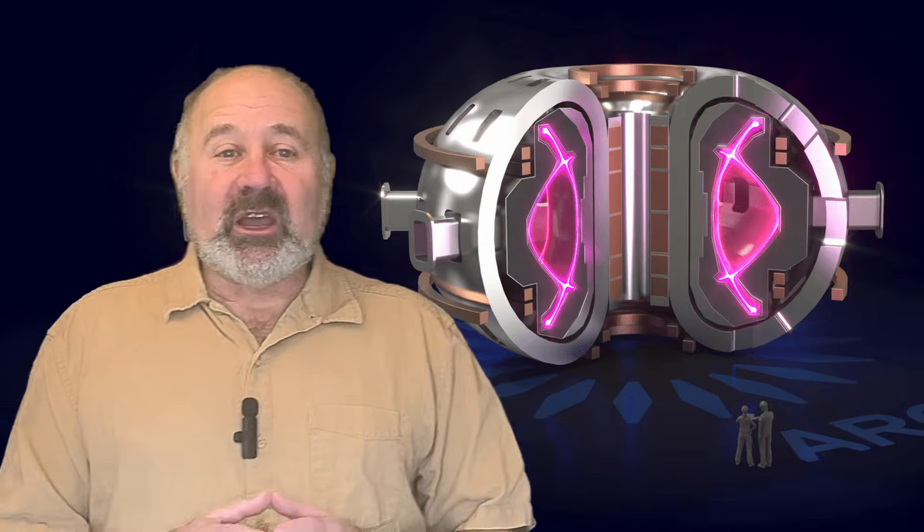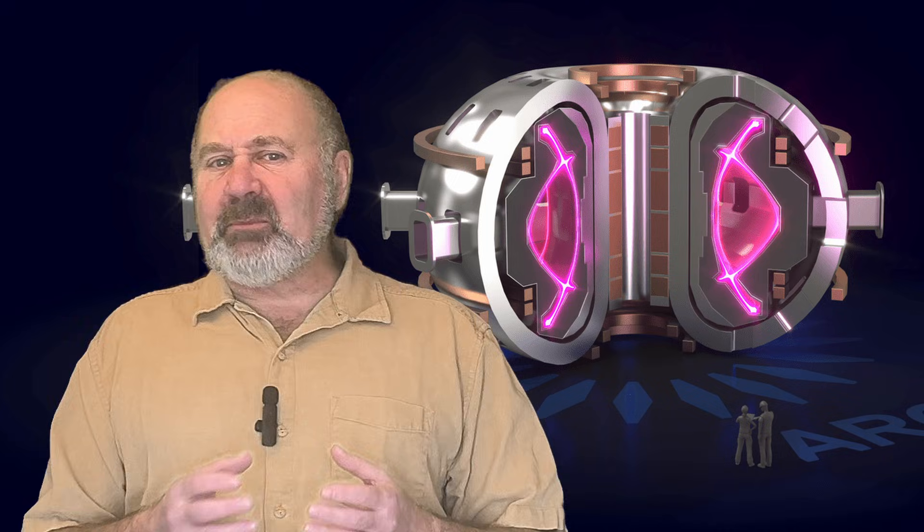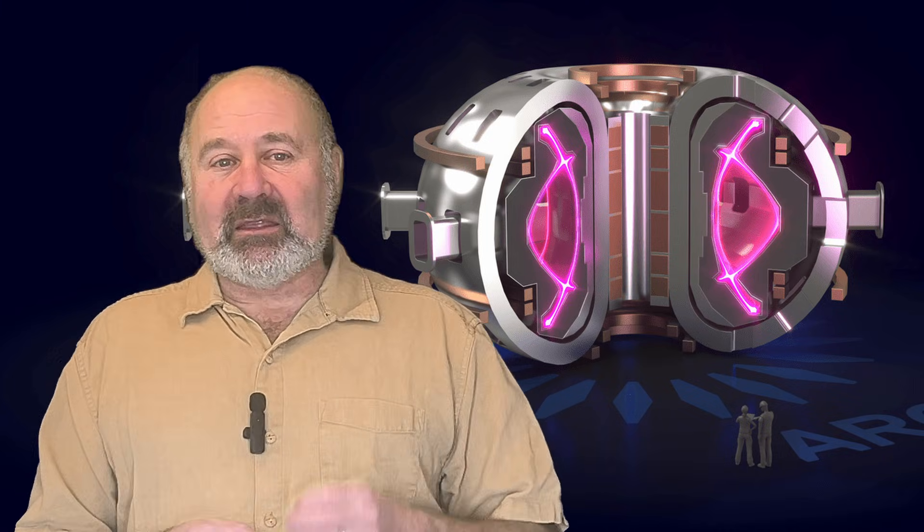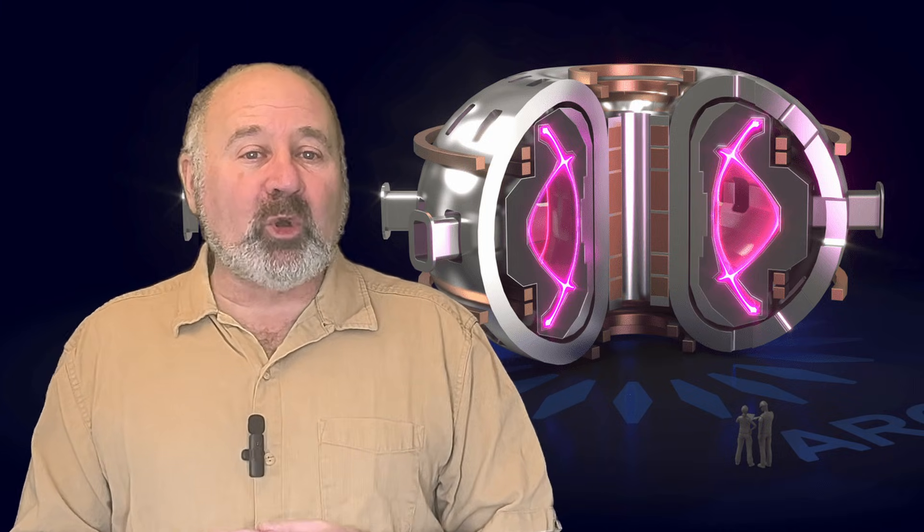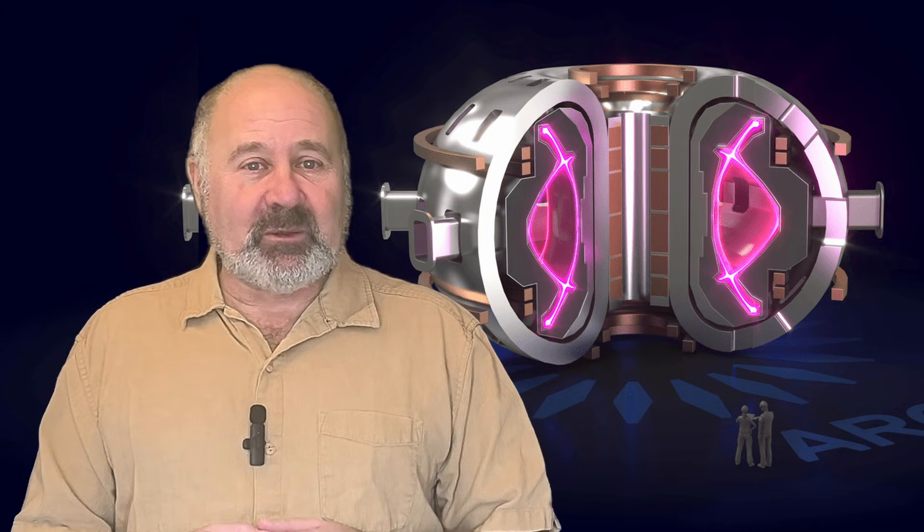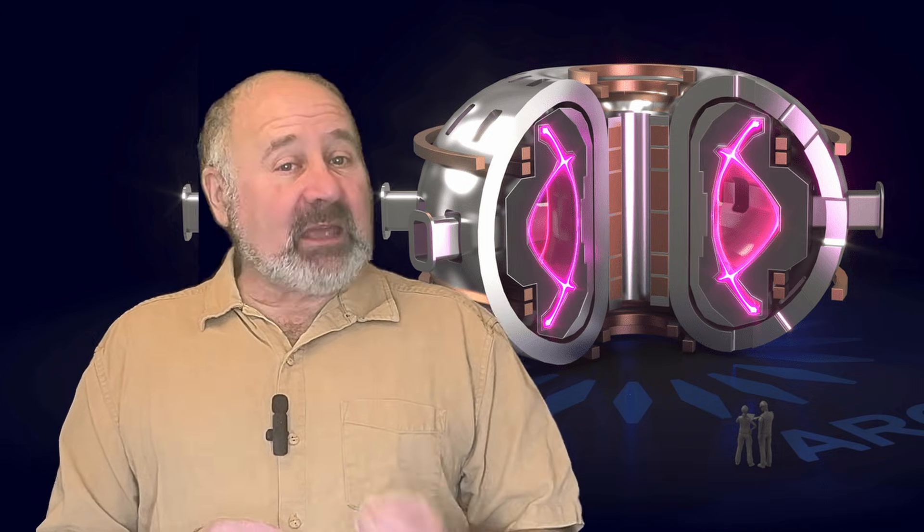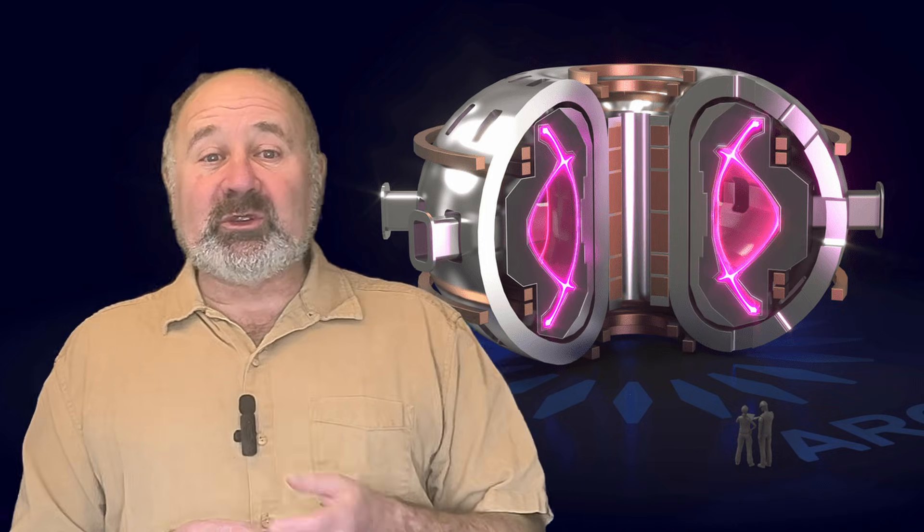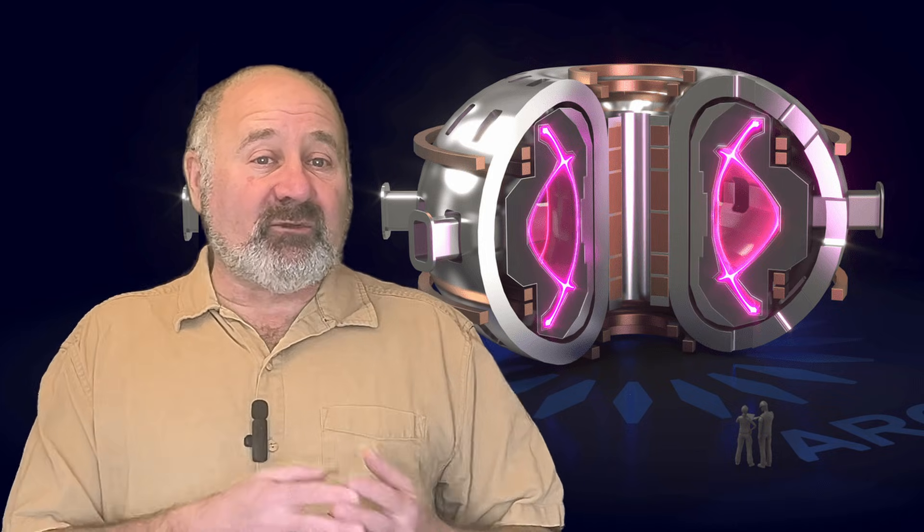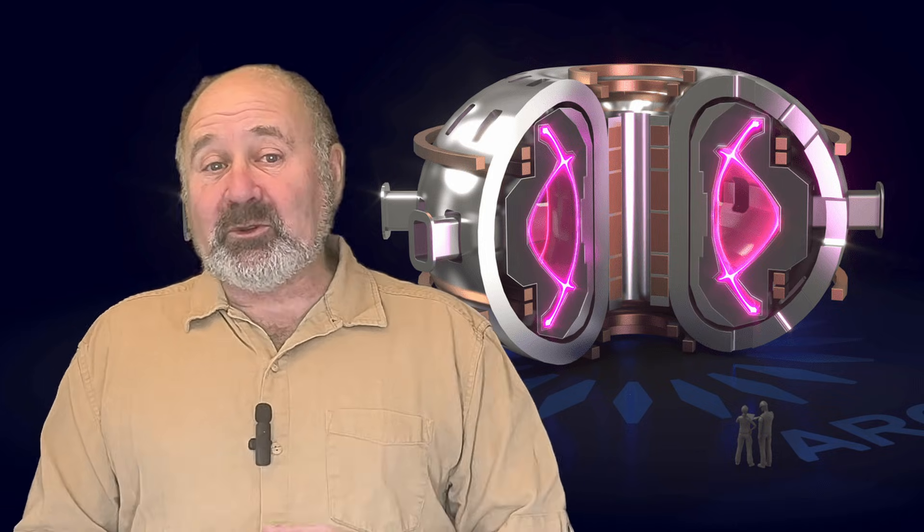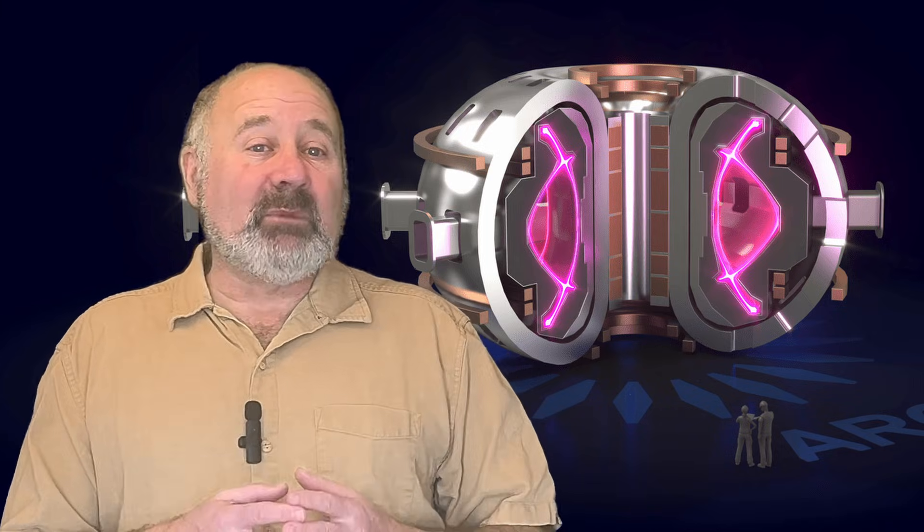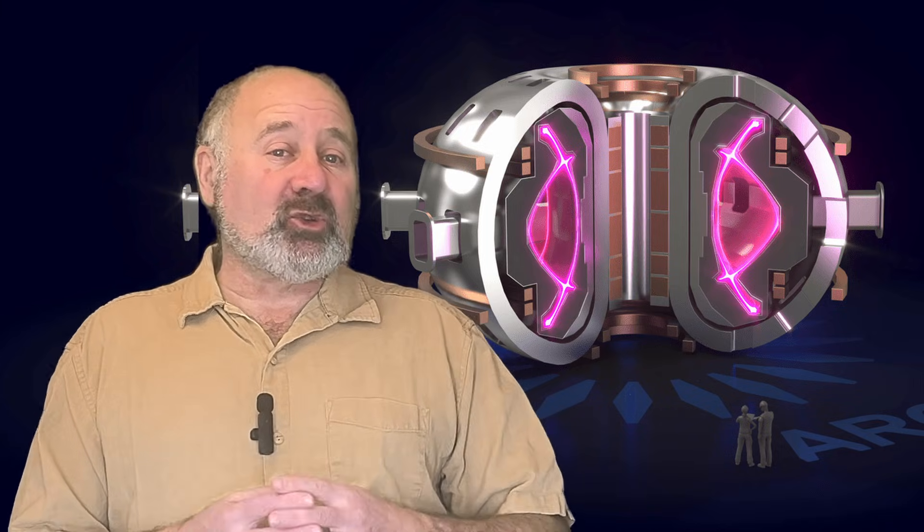In most reactors, it's slowed and then captured in some kind of liquid blanket, like the fluorine-lithium-beryllium molten salt used by Commonwealth Fusion Systems. After depositing its heat in the blanket, the neutron is then captured by lithium-6, producing a tritium atom to be used as fuel. It may also be captured by the beryllium, which then emits two neutrons, increasing tritium production.